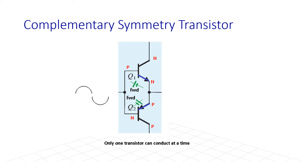Now when the input is negative, what will happen? This will be forward biased — negative here, positive here — but this will be reverse biased because negative here and positive here will make it reverse biased. So in that case this transistor will conduct. We can conclude that only one transistor can conduct at one time.